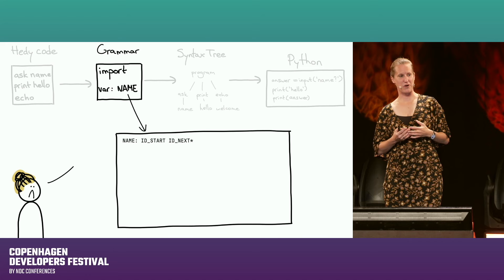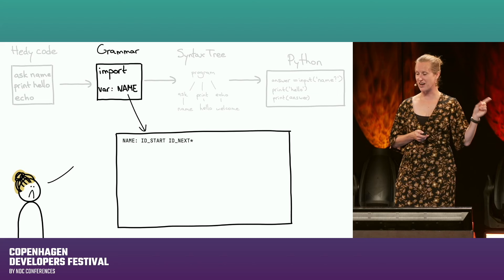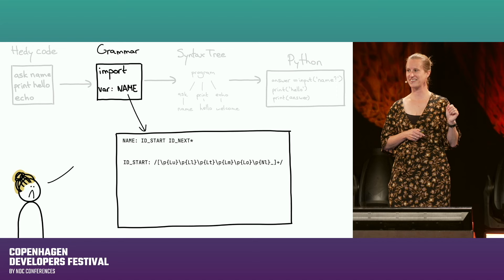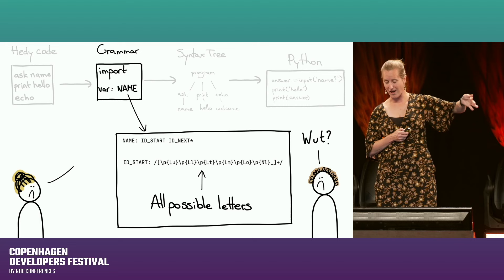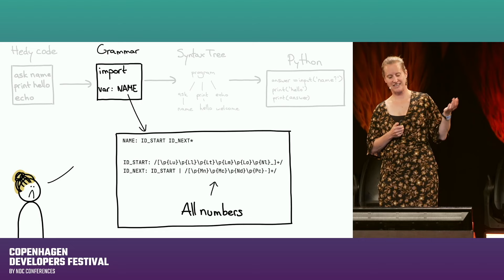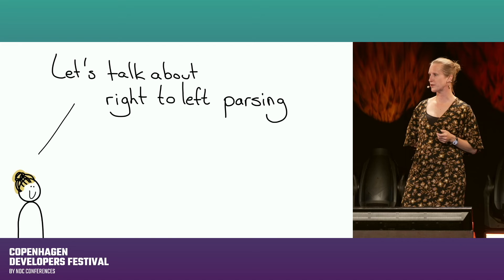Sadly, when you improve this, the code doesn't get simpler. Our current variable name definition — which is also what Python uses — uses Unicode character classes. Those are all possible letters in all alphabets, and all numbers in all numeral systems. It's not very readable, but it is very inclusive.